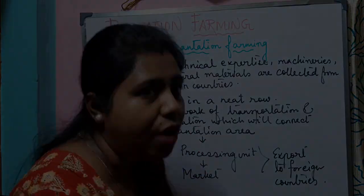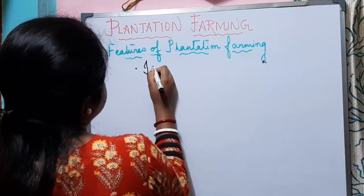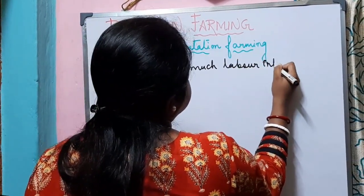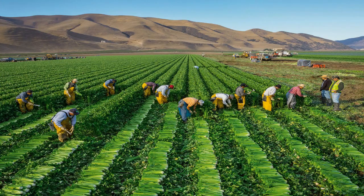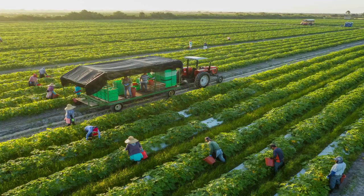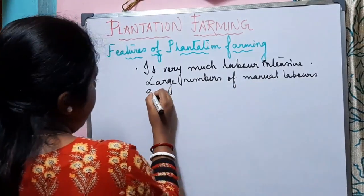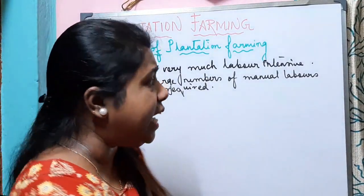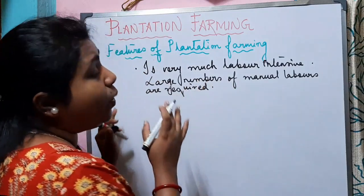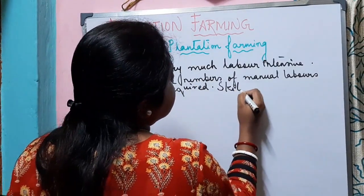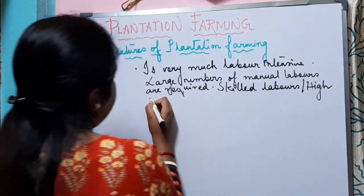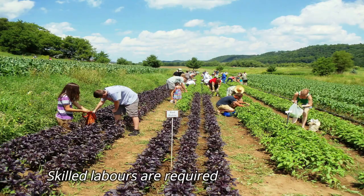Plantation farming is very much labor intensive, meaning large numbers of manual laborers are required — for pruning and for plucking of leaves, we need a large number of manual laborers. But along with manual labor, we also need skilled labor — labor with high-grade or high managerial skills.